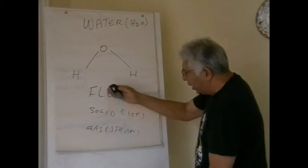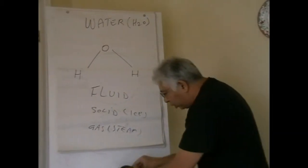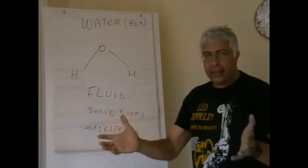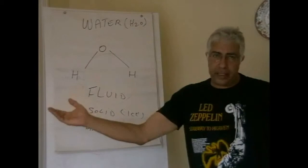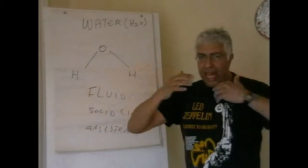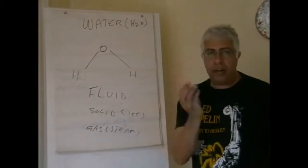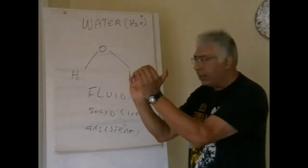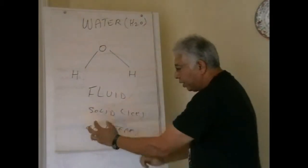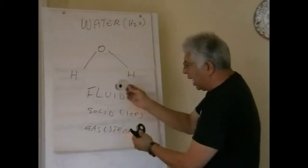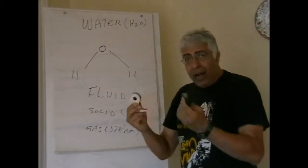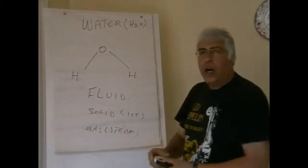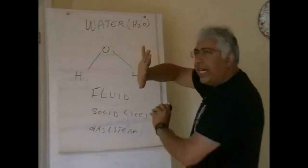It also gives life to ten thousand things. Ten thousand things in the Dao De Jing means the universe - plants, animals, species, bacteria, viruses, protozoa, amoeba, everything. It's just a heading: ten thousand things. So water gives life to ten thousand things, which is the yang.